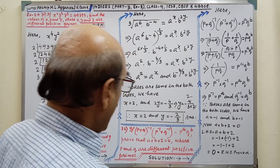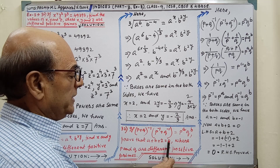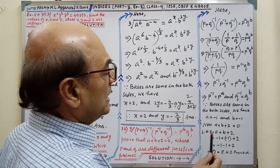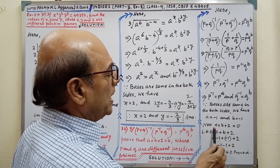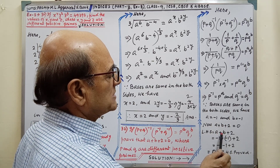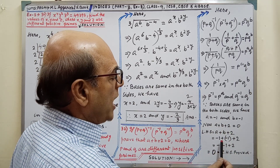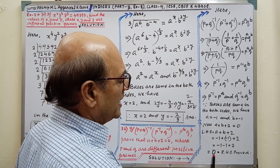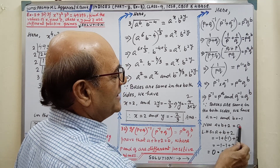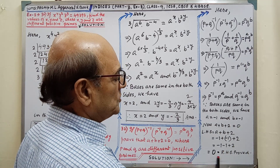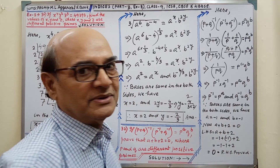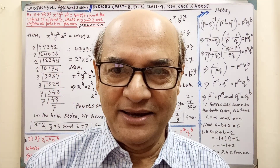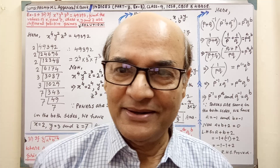Now we have to prove a plus b plus 2 equals 0. We have got the value of a and b. After writing the statement, we take the LHS: a plus b plus 2. Then we put the values of a and b. By putting and simplifying, we are getting 0, and RHS is also 0. So 0 equals RHS — proved. If you follow the steps attentively, you will easily understand. Very simple sum. Thank you, everybody.